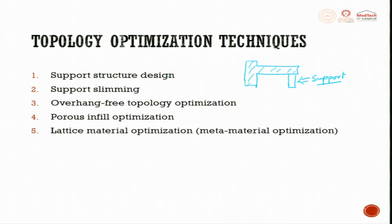Optimizing the support structure itself is a huge saving in time and money. Next is support slimming, then overhang-free topology optimization — where you orient the part such that support structure is eliminated entirely, reducing cost further. After that is porous infill optimization and lattice material optimization.